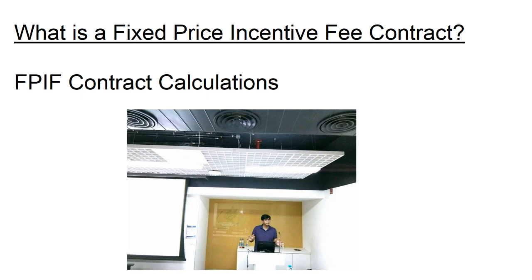When the buyer is incentivizing cost performance, the buyer and seller establish a cost target, a target fee, and a share ratio such as 80:20 or 70:30 or something similar. Cost performance below the target cost earns an incentive fee, while cost performance above the target cost means the seller relinquishes some of the target fee.